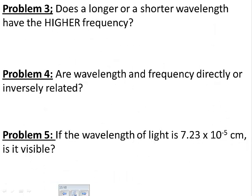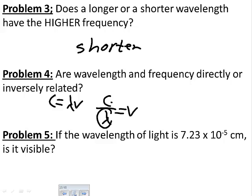So it's obviously a lot less than 400 nanometers. So it's not visible. Does the longer or shorter wavelength have the higher frequency? Well, it's shorter. Shorter wavelengths have the highest frequency. And then problem four. Are wavelengths and frequency inversely related? Well, you have your equation involving wavelengths and frequency. You can rearrange that to be whatever you want it to be over lambda equals V. And you're dividing it over here and multiplying it over here. So they're going to be inversely related.